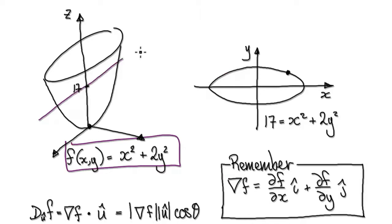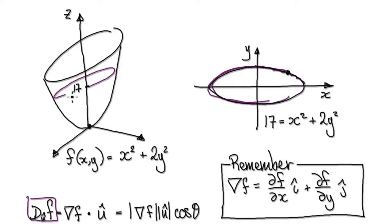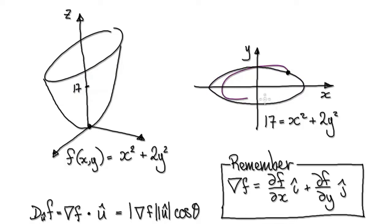If you cut the surface at a height of 17, you're going to get a level curve looking like this. Remember, if you're an ant walking along this path, you're not going to climb up in height — this is not going to increase. You're not going to go uphill or downhill; you're always going to be at the same elevation.